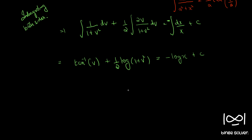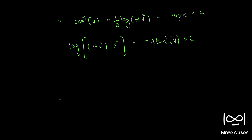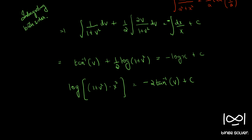We bring log X to the left side and multiply throughout by 2. Using the property log a plus log b equals log ab, we get log(1 plus v squared) plus 2 log X, which becomes log(X squared), equal to minus 2 tan inverse v plus c. So log of X squared times (1 plus v squared) equals minus 2 tan inverse v plus c.